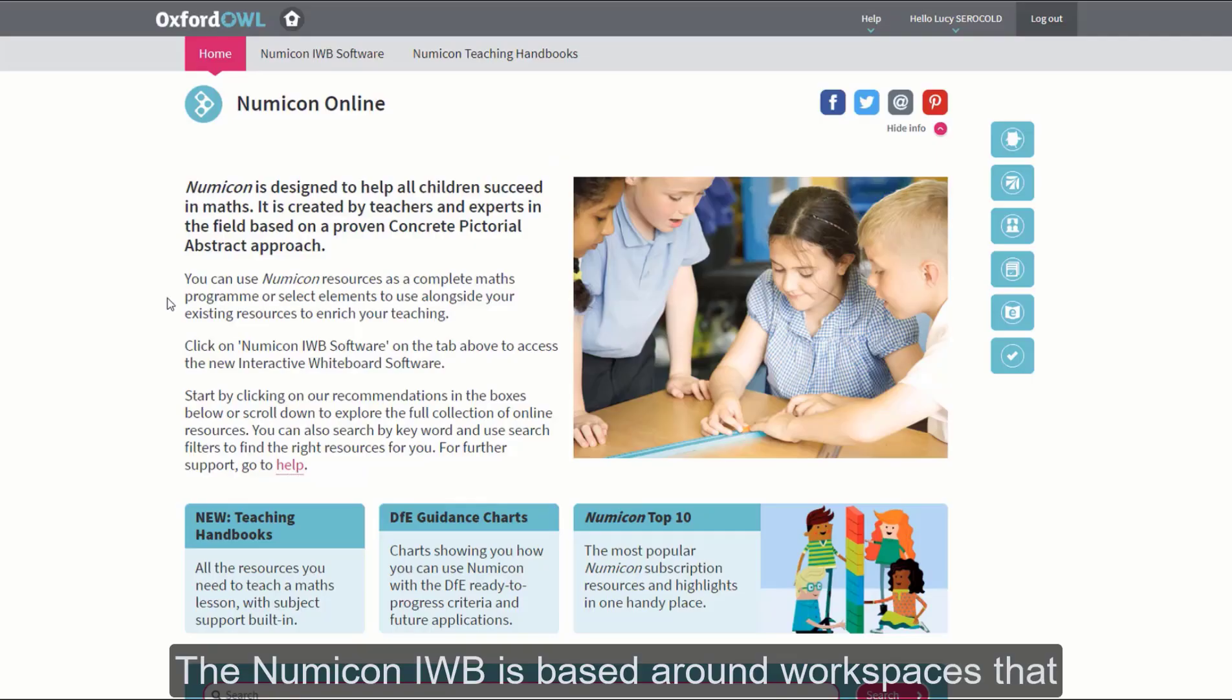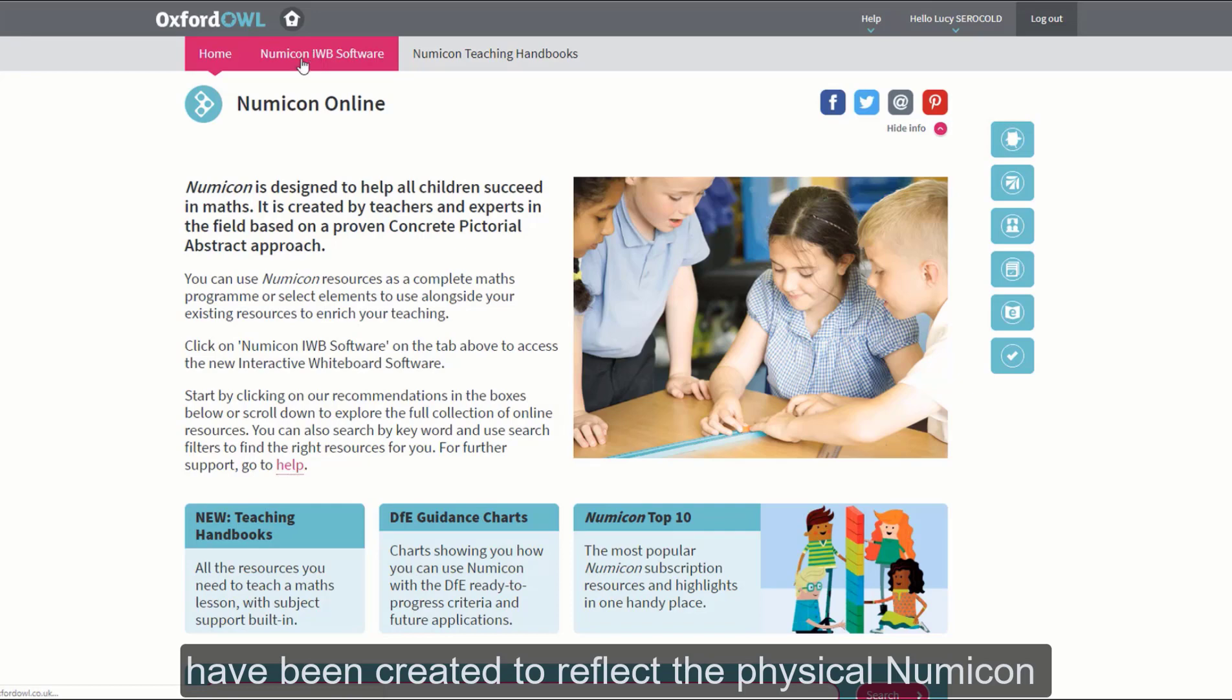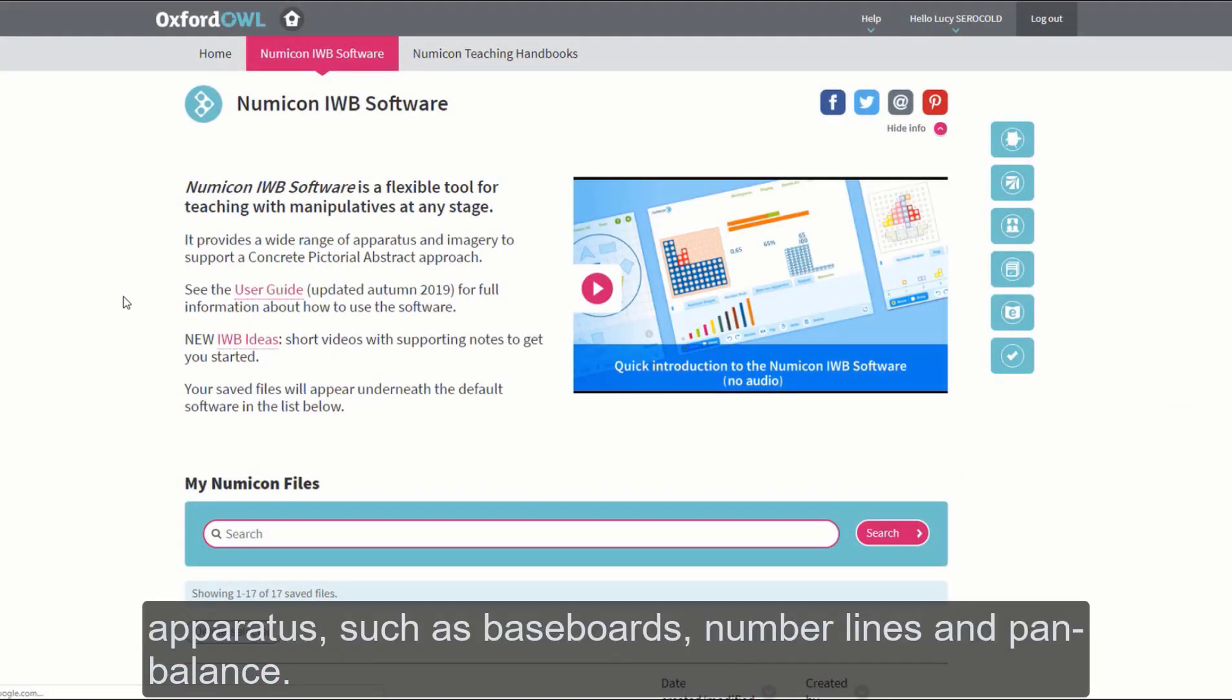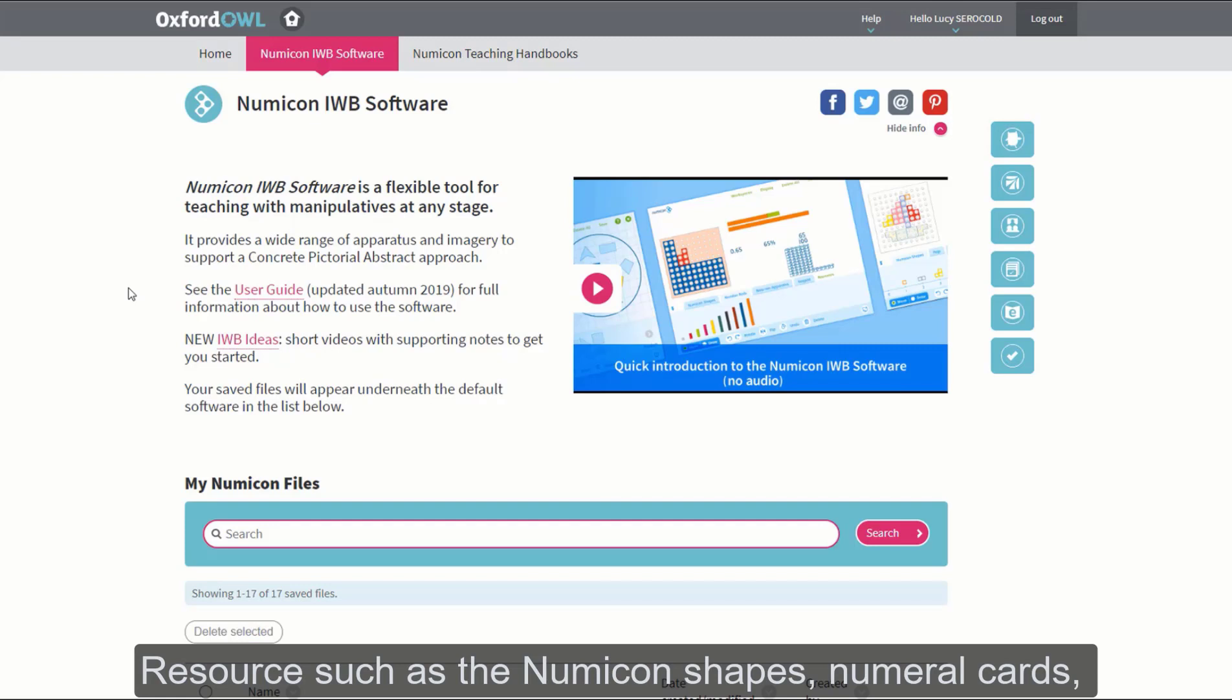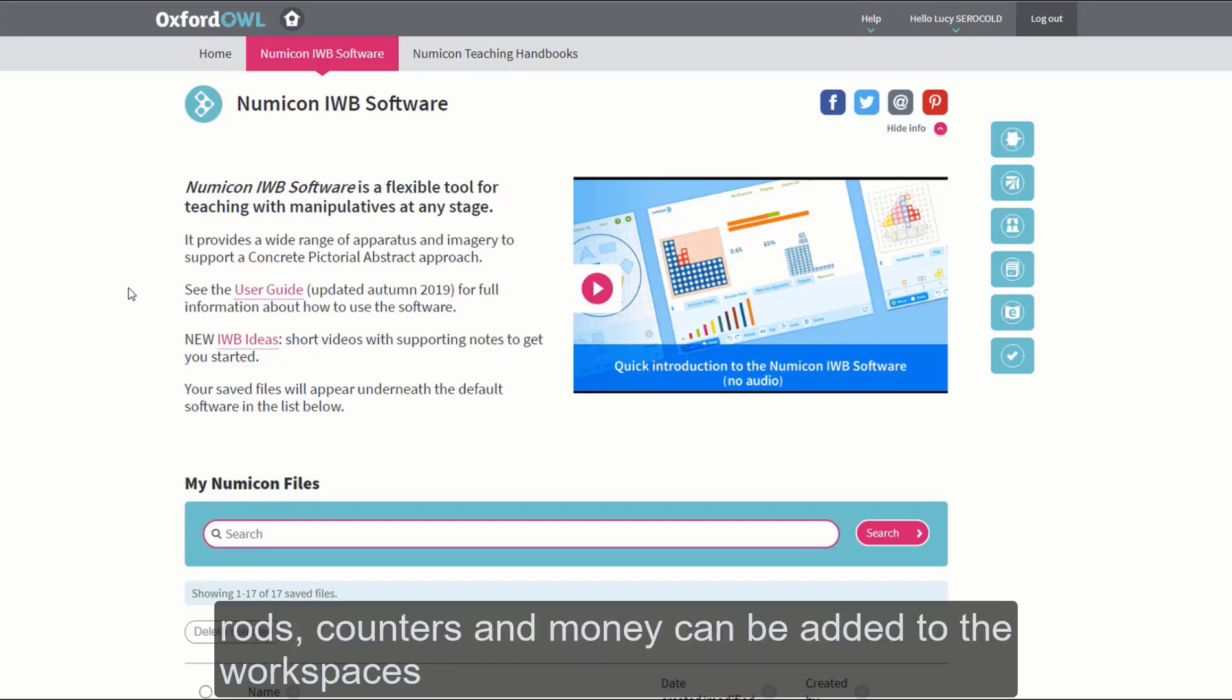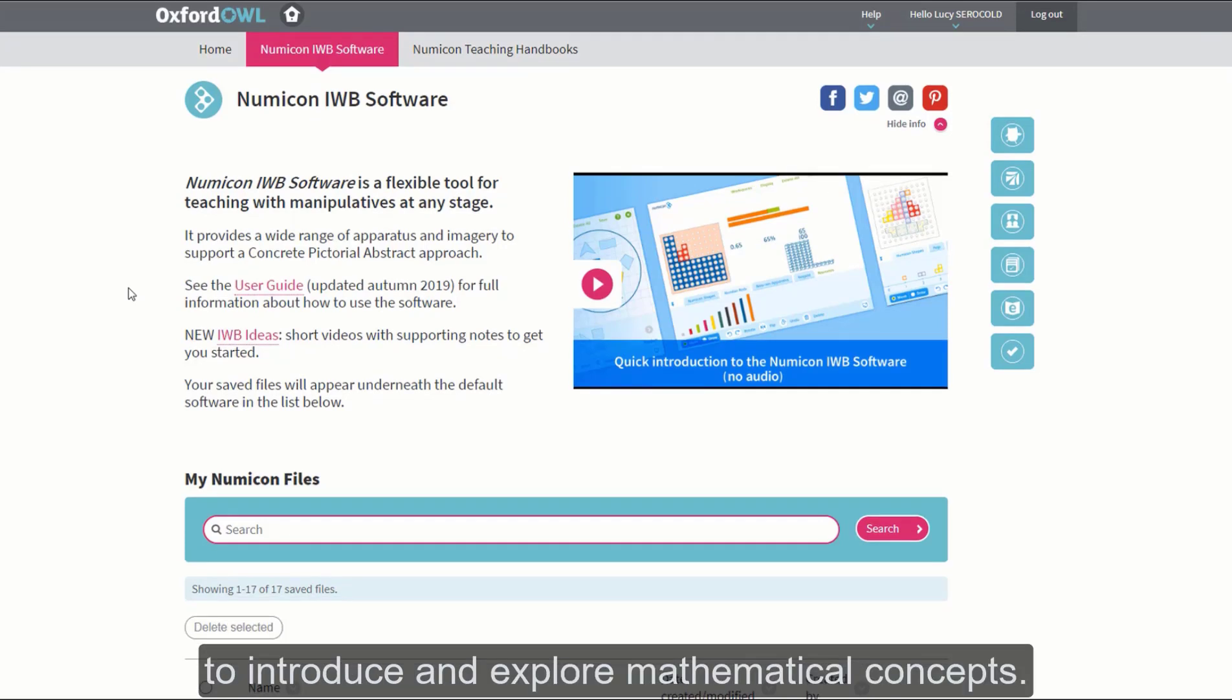The Numicon IWB is based around workspaces that have been created to reflect the physical Numicon apparatus, such as baseboards, number lines and pan balance. Resources such as the Numicon shapes, numeral cards, rods, counters and money can be added to the workspaces to introduce and explore mathematical concepts.